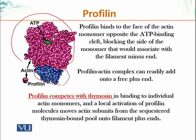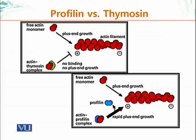Profilin releases sequestered actin monomers and makes them available for polymerization. As soon as the monomer is added onto the actin filament, it goes through a conformational change, and because of that conformational change, profilin comes off. So profilin ensures that the monomer doesn't bind thymosin and remains available for polymerization, but once it has been added to the filament, profilin dissociates and the filament is elongated.